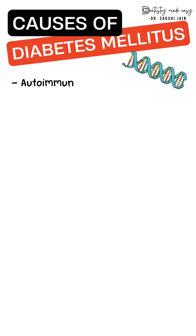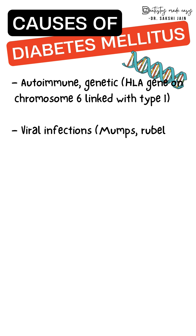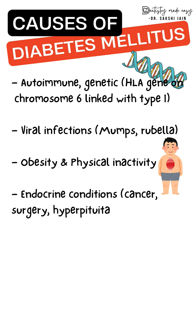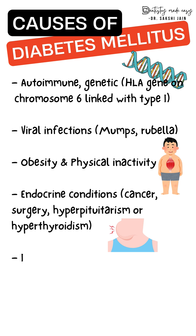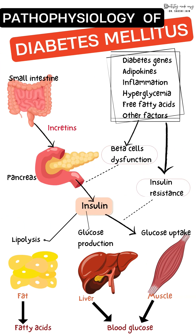The causes of diabetes mellitus can be genetics, which is linked with Type 1 and commonly seen in children. Other causes include infections, obesity, endocrine conditions, steroid therapy used for a long time, and pregnancy, which leads to gestational diabetes.